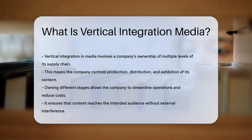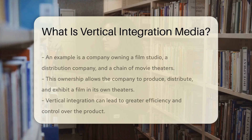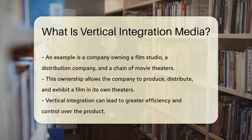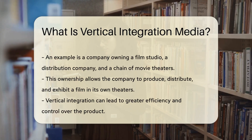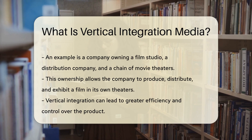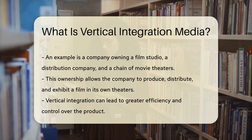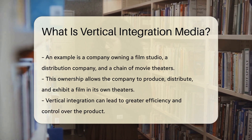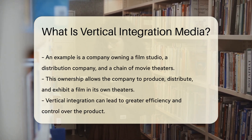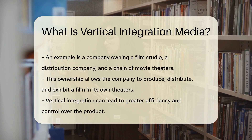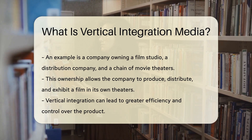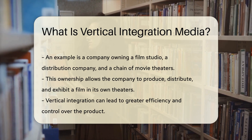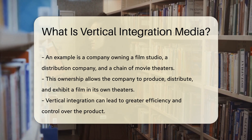For example, a vertically integrated media company might own a film studio, a distribution company, and a chain of movie theaters. This allows the company to produce a film, distribute it, and show it in its own theaters.